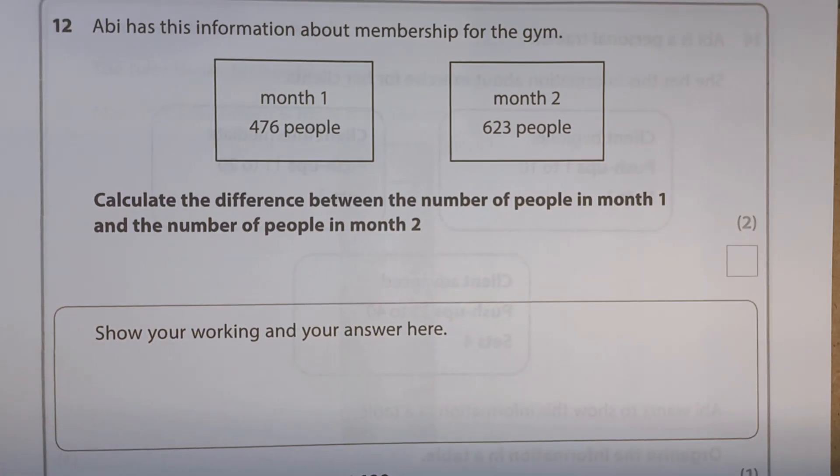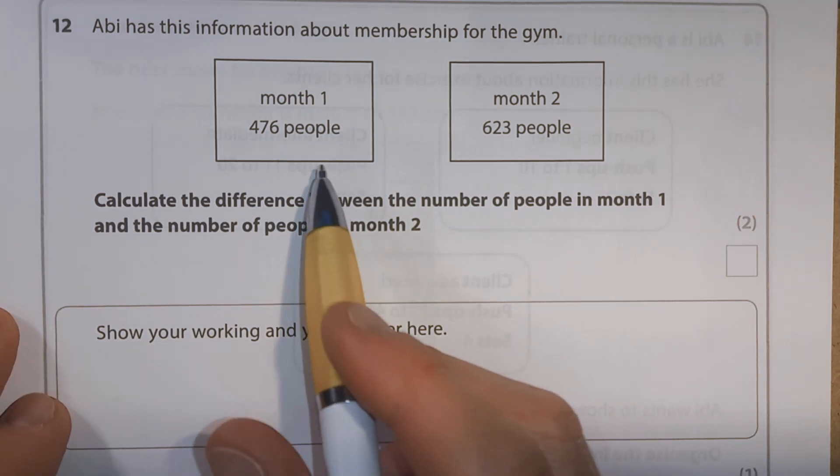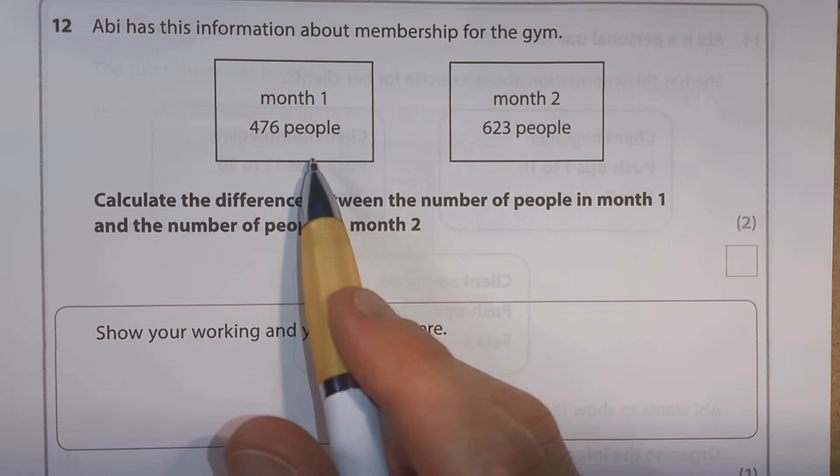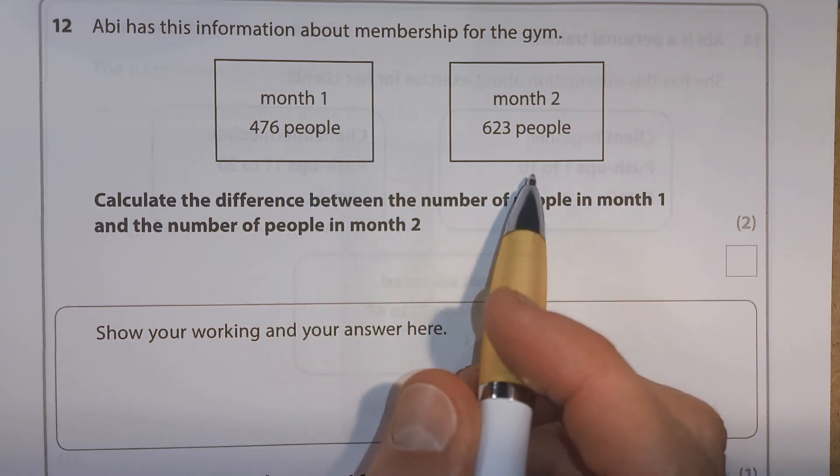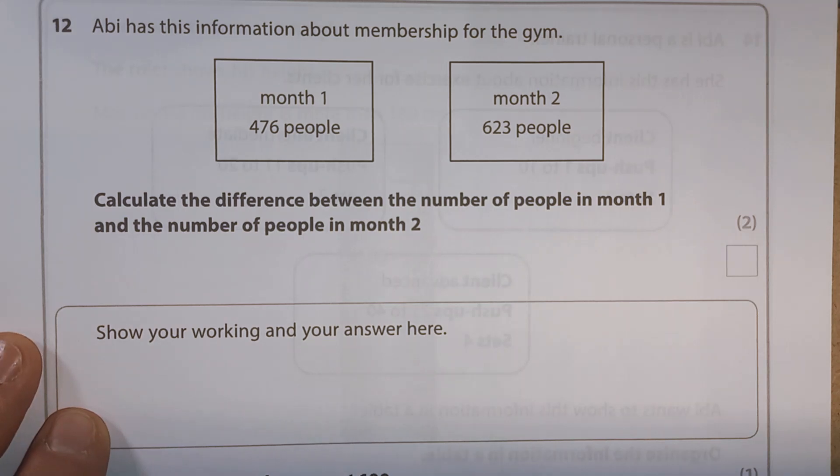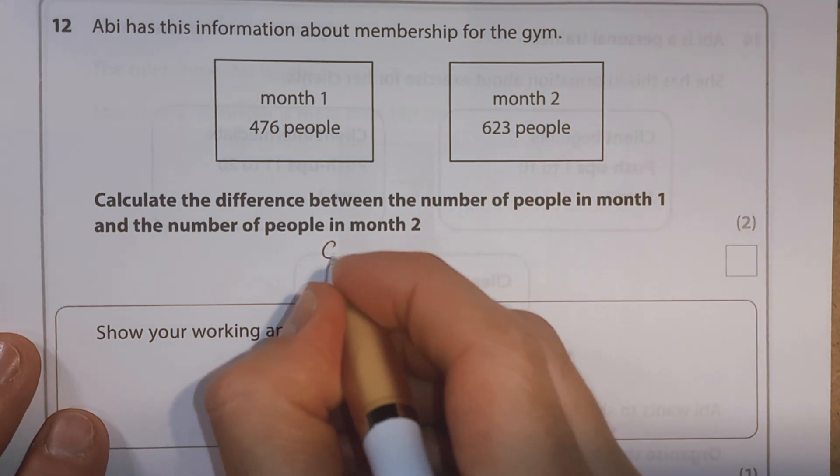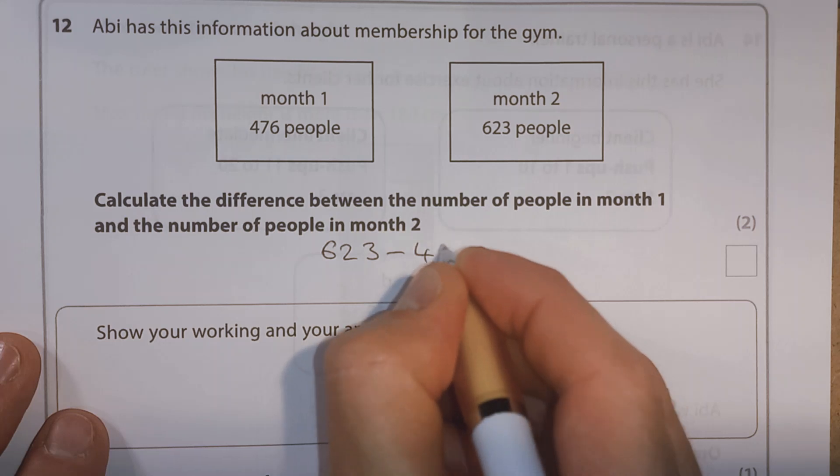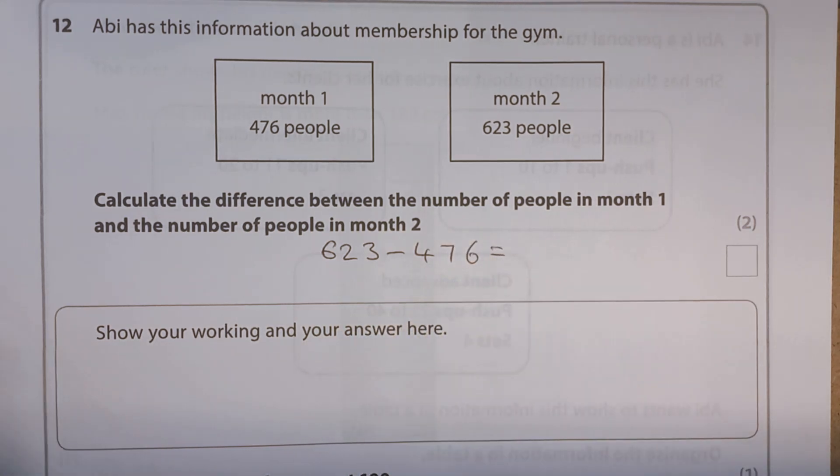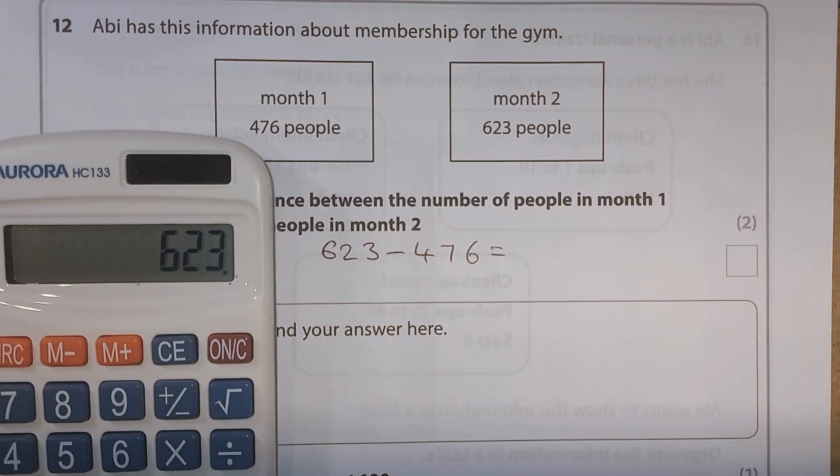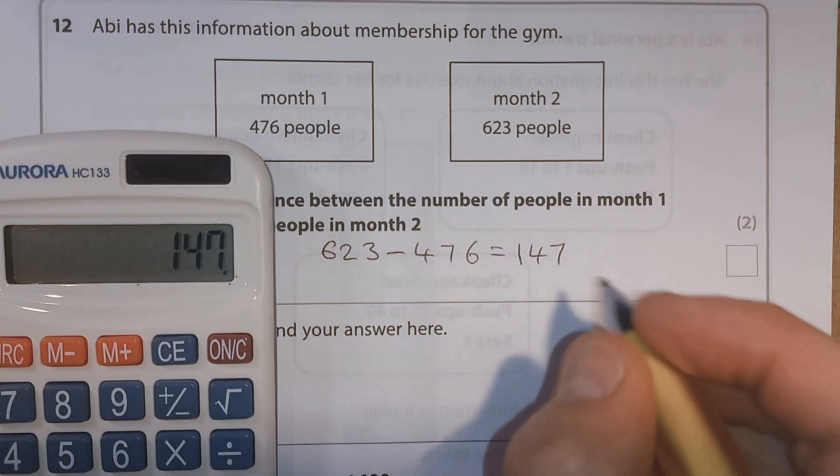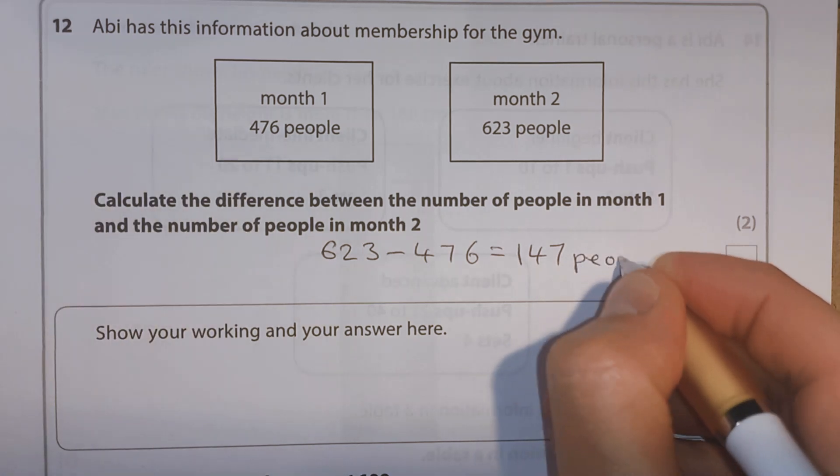Okay, question 12. Abbey has this information about membership for the gym. Month one, we've got 476 people. Month two, 623 people. Calculate the difference between the number of people in month one and the number of people in month two. So remember, when we're working out the difference, we always take the biggest number first and subtract the smaller number. So 623 minus 476 and we get 147 people.